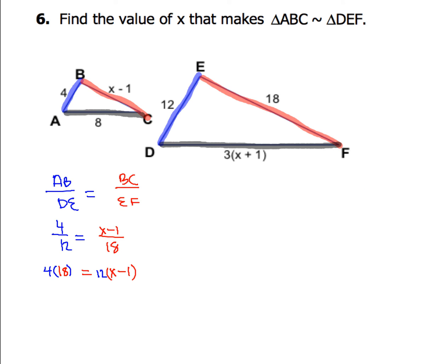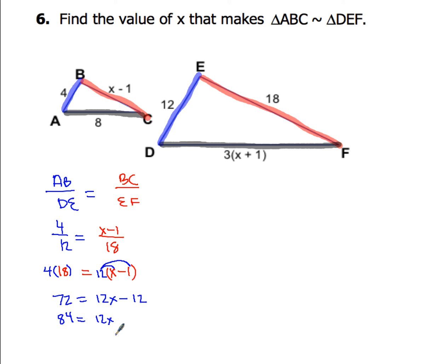This is a spot where most people make a mistake. Cross-multiplying: 4 × 18 = 72. Then 12 × (X − 1) — you must distribute to both terms: 12X − 12. So 72 = 12X − 12. Add 12 to both sides: 84 = 12X. Divide both sides by 12: X = 7.